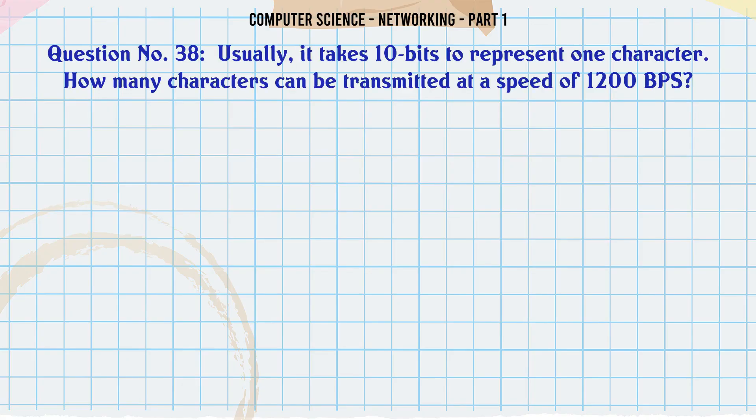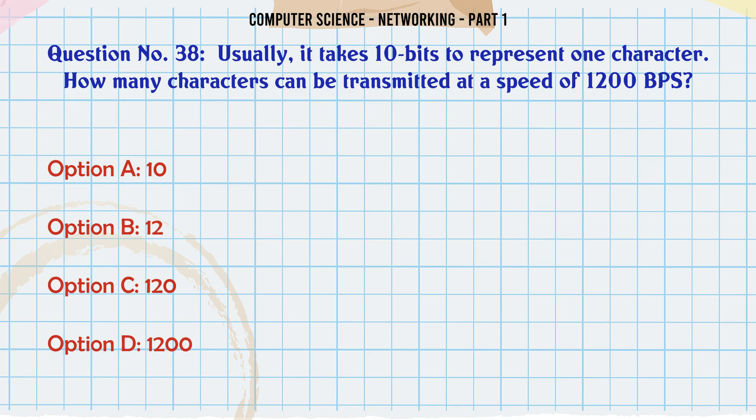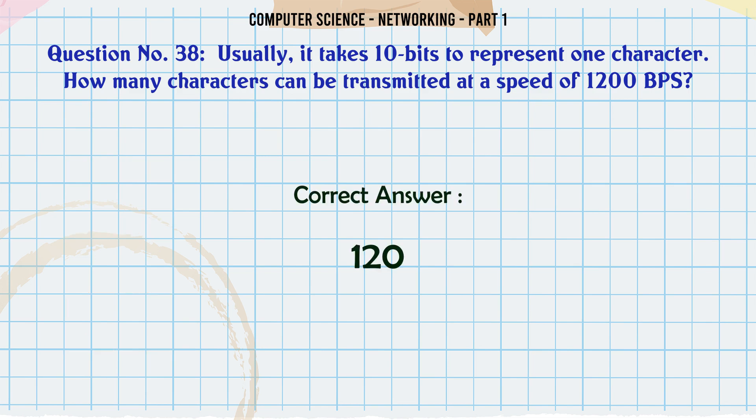Usually it takes 10 bits to represent one character. How many characters can be transmitted at a speed of 1200 bps? A. 10. B. 12. C. 120. D. 1200. The correct answer is: 120.